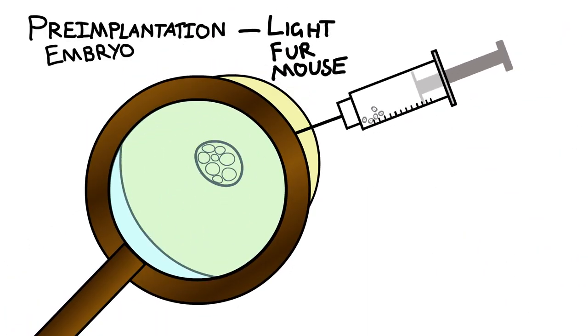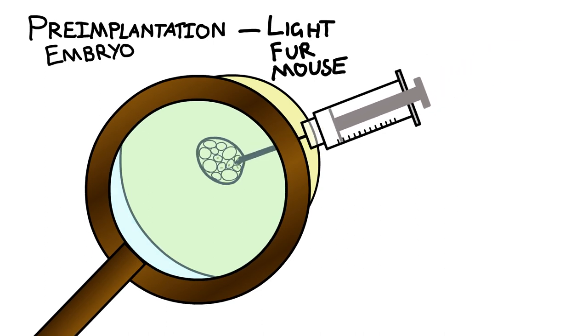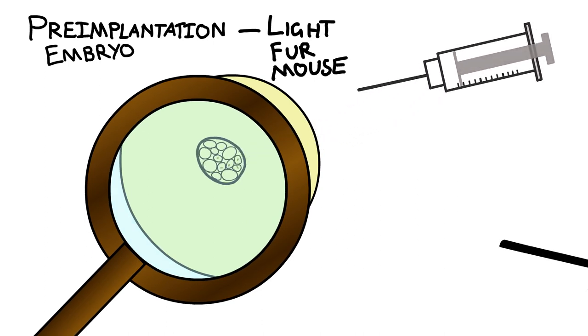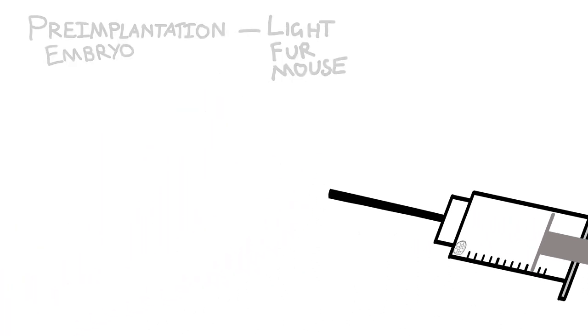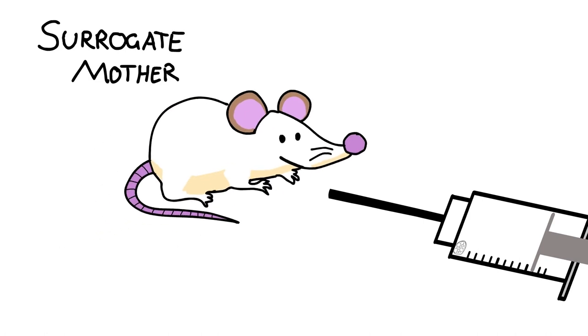Once collected, these stem cells containing the mutation can be injected into a developing pre-implantation embryo of a light fur mouse. This embryo can then be taken and transferred into a pseudo-pregnant surrogate mother, one that has recently mated with a sterile male.